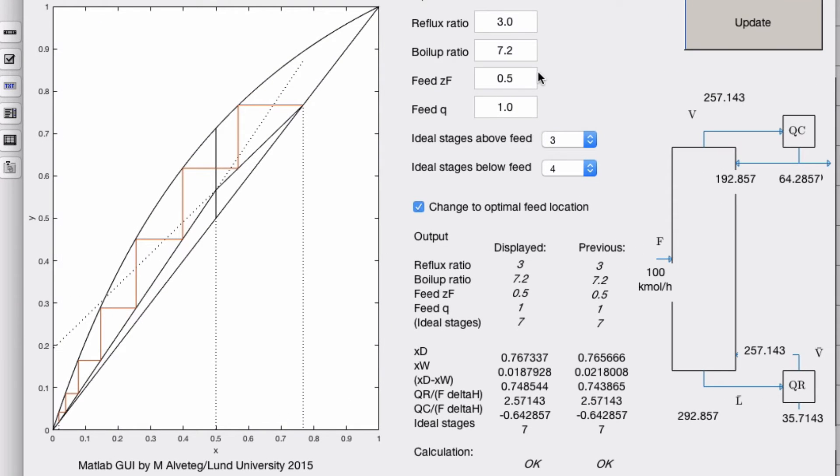Okay, what happens if we change feed condition? Well, we can change q, for example, to zero. That means that this line will instead go horizontal. And if we keep the lines in the positions we have with the same slopes, well, then we're going to go out there. And we need to do a smaller triangle.